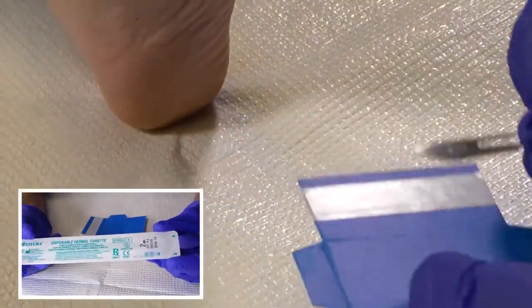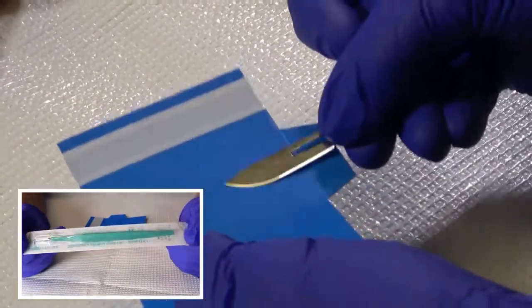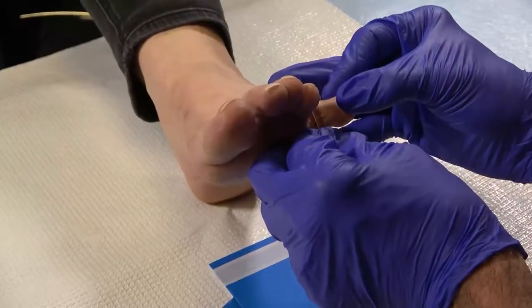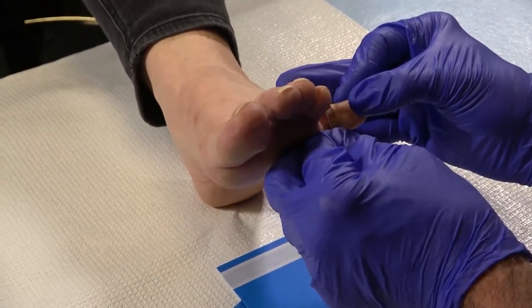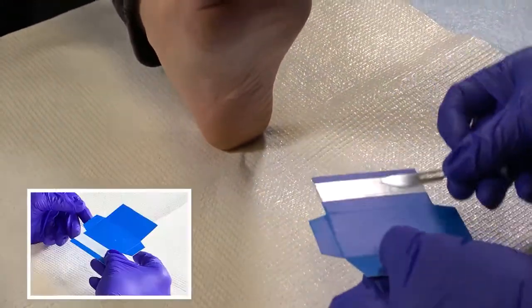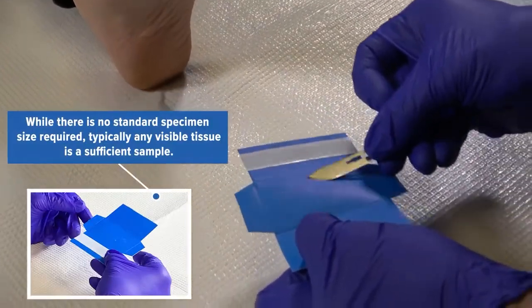Specimen collection may also be accomplished through an appropriate curette procedure should you be inclined. The specimen is collected into a specialized skin collection pack. Place the specimen on the colored surface. This allows the collector and the laboratory to clearly visualize the sample.